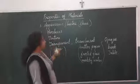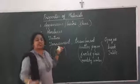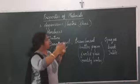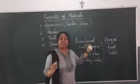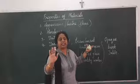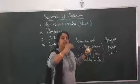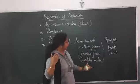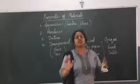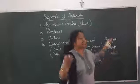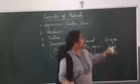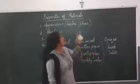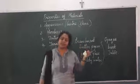So I hope this is clear. Transparent means objects through which we can see very clearly because light can pass through them. Translucent means objects through which we can see but not clearly — some light passes and some is reflected. And opaque means objects through which we cannot see at all because light cannot pass through them. For today's class we will stop here; the remaining properties will be covered in the next class. Thank you and have a nice day.